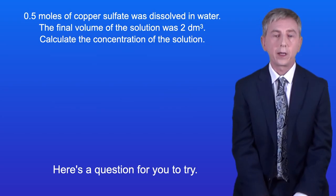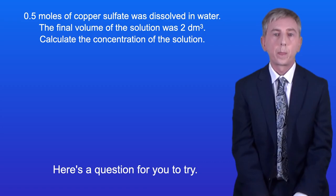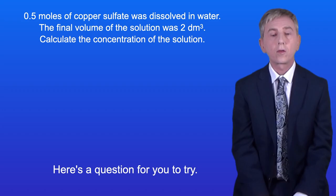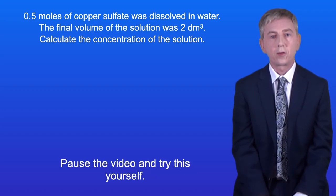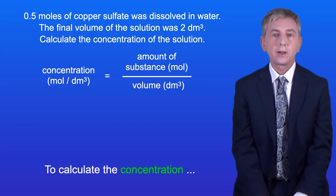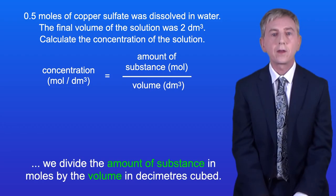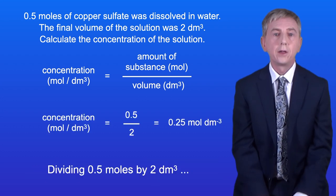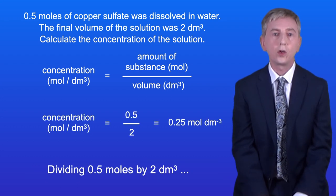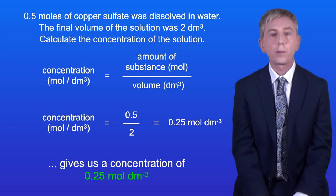Here's a question for you to try. 0.5 moles of copper sulphate was dissolved in water. The final volume of the solution was 2 decimetres cubed. Calculate the concentration of the solution. To calculate the concentration, we divide the amount of substance in moles by the volume in decimetres cubed. Dividing 0.5 moles by 2 dm³ gives us a concentration of 0.25 moles per decimetre cubed.